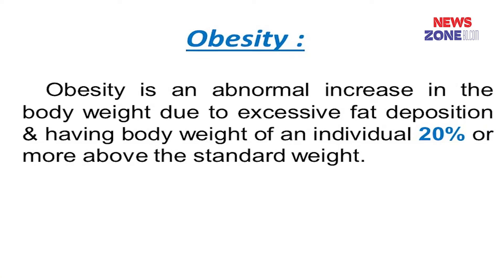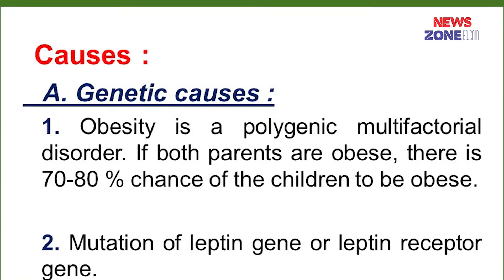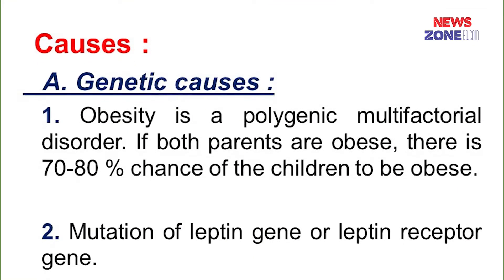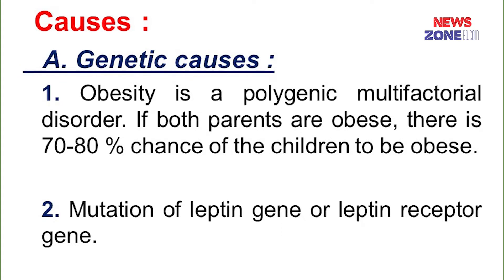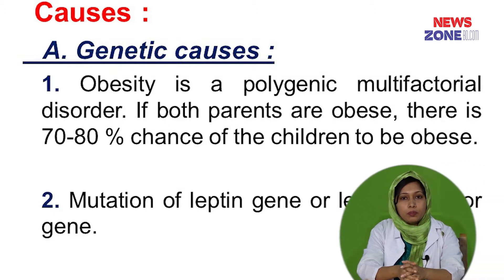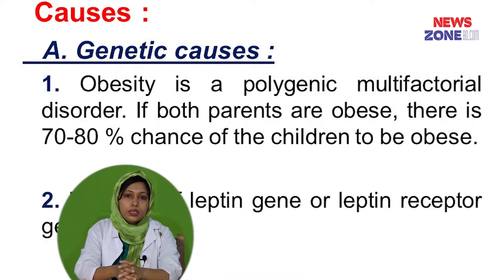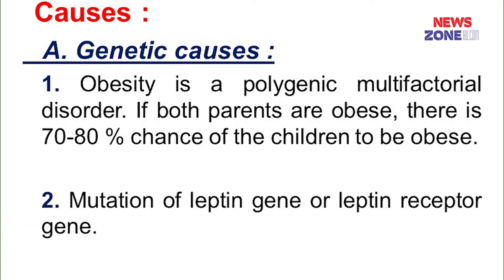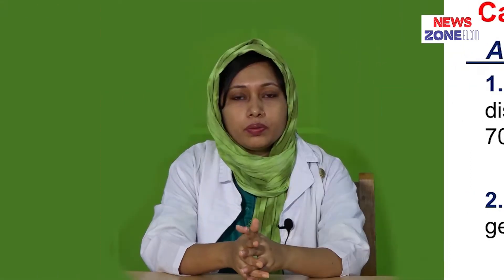Obesity has some factors that cause it — some genetic factors and some environmental factors are responsible for a person to be obese. Genetic factors are non-modifiable. First, if both parents are obese, there is a 70 to 80 percent chance that children will be obese. Second, mutation of the leptin gene, deficiency of the leptin gene, or leptin receptor gene. Leptin is a hormone secreted by adipose tissue and placenta that suppresses the satiety centre and prevents obesity.